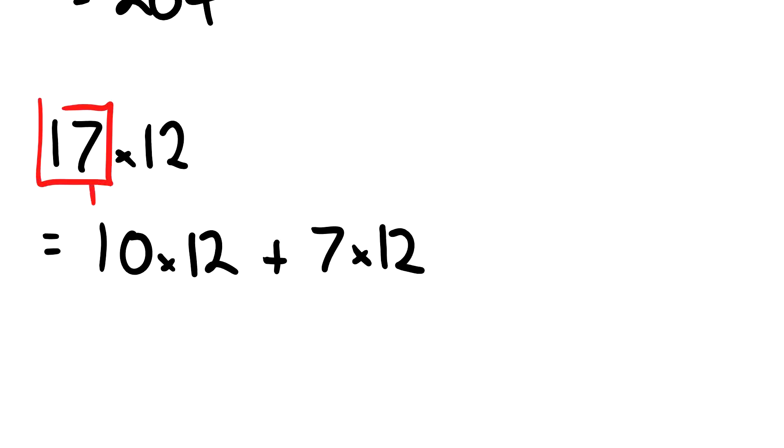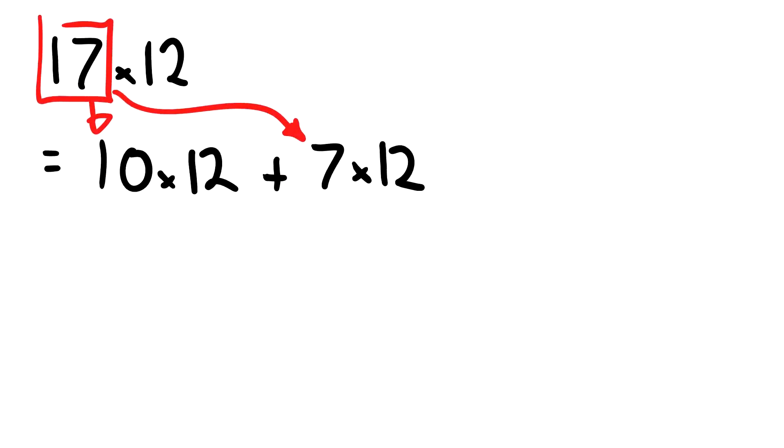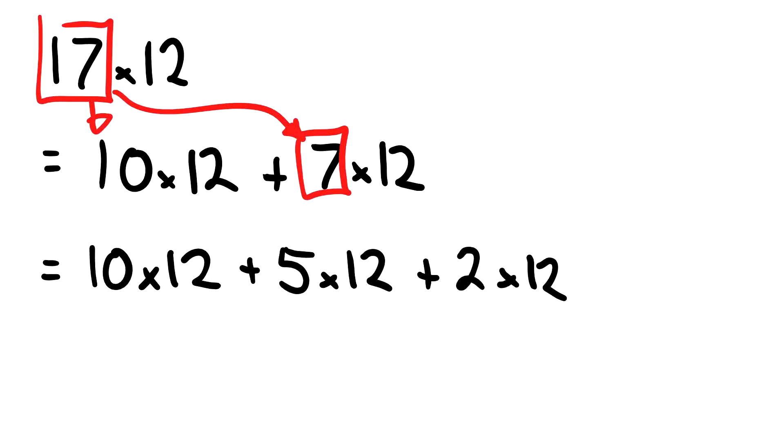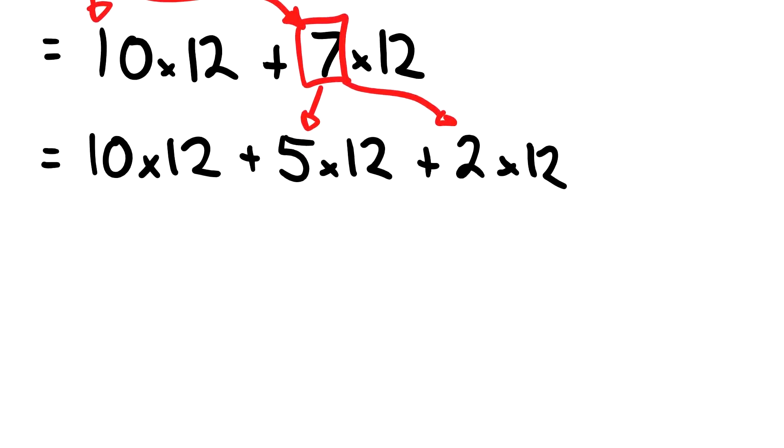Some of you may be like, oh well, 7 times 12, I'm not really sure if I know how to do that. Well, let's break that up again. We could write 10 times 12 here, and this time we're going to look at breaking up our 7. If I break that 7 up, I could get 5 times 12 and I could get 2 times 12.